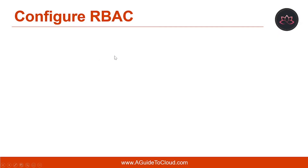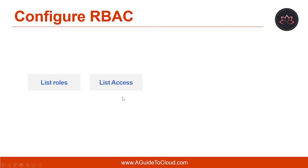When you configure RBAC, there are some things you need to understand. The first is listing roles — a role definition is a collection of permissions that you can use for role assignments. The second is list access. When managing access, you want to know who has access to what, what their permissions are, and at what level.